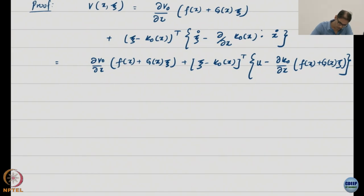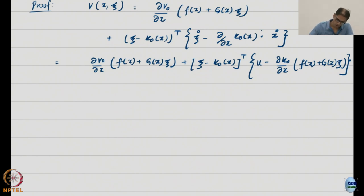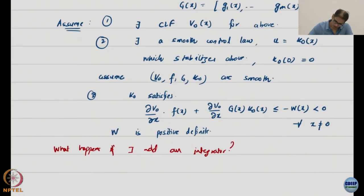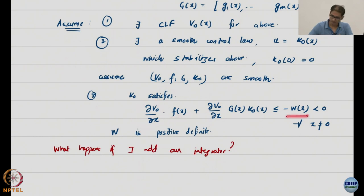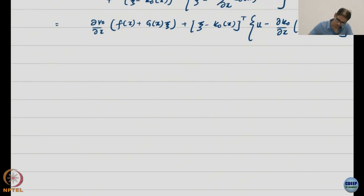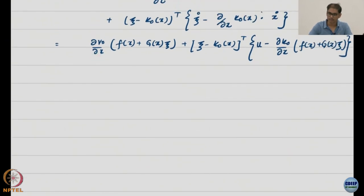I have simply substituted for ξ̇ and ẋ. Now we start playing some fun tricks. From the previous page, I know that ∂V₀/∂x · (f + Gk₀) gives a negative definite term. I am going to use that by splitting the first term: writing G(x)ξ as G(x)k₀(x) plus the remainder G(x)(ξ − k₀).